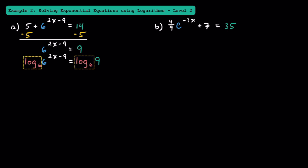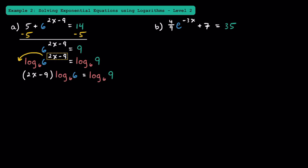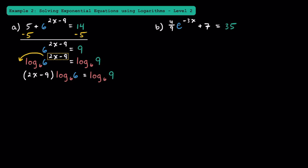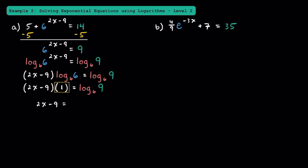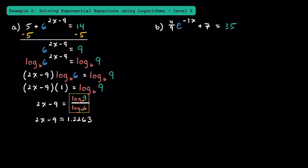To get this down from being an exponent, we're going to take log base 6 of both sides. Now that we have a logarithm, we can bring this exponent down in front, and we get the quantity of 2x minus 9 multiplied by log base 6 of 6 is equal to log base 6 of 9. Remember that log base 6 of 6 is just equal to 1, so the left side simplifies down to 2x minus 9. On the right side, using the change of base formula, we can write log of 9 over log of 6, which is approximately 1.2263. Adding 9 to both sides, 2x is approximately 10.2263, and dividing both sides by 2, x is about 5.6131.